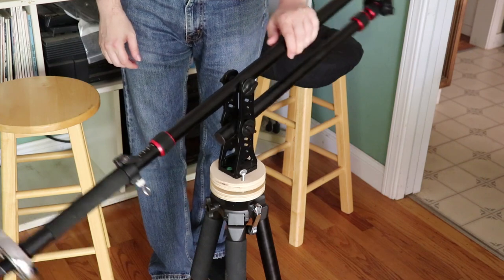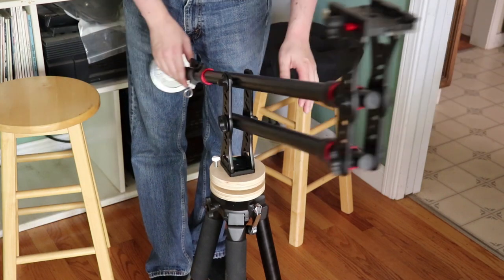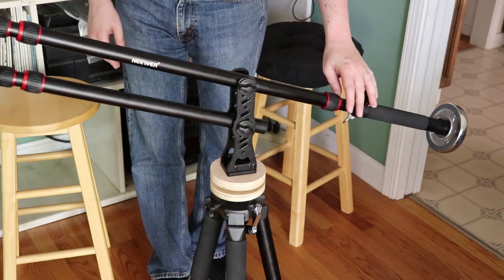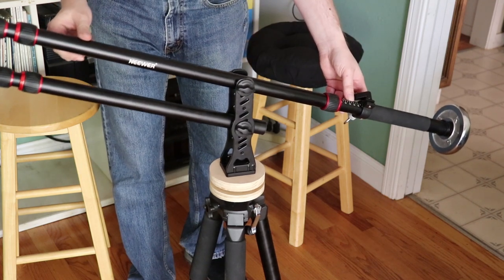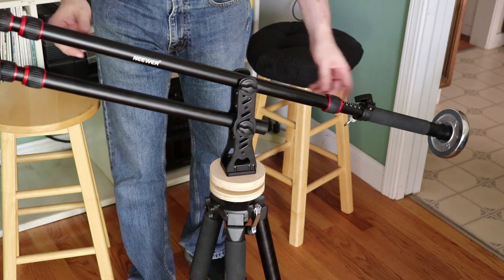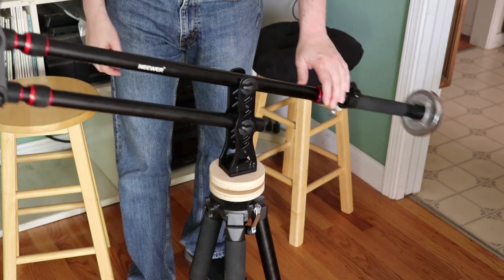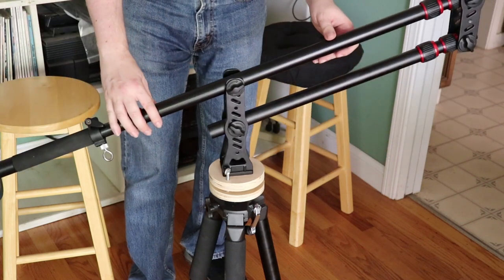It spins very nicely on the lazy Susan but you can see it wobbles quite a bit. What I'm going to do to see if I can fix that is I'm going to make a wooden shim that will fit between the two discs. That way when the boom tries to rock, the shim will be in there preventing the two discs from squeezing together.